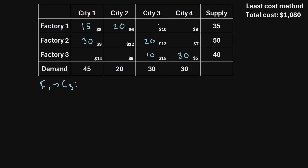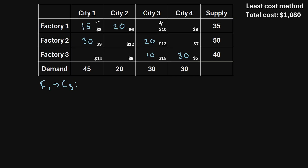We draw a closed loop where we only touch other allocated cells. Starting at the F1→C3 cell, we draw a line to an allocated cell, then a vertical line to another allocated cell, then a horizontal line to another cell, and back to our starting cell — forming a closed loop touching only allocated cells. We then draw alternating plus and minus signs to each cell in that loop: our initial cell gets a plus, the next gets a minus, then plus, then minus.